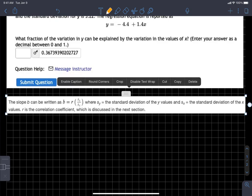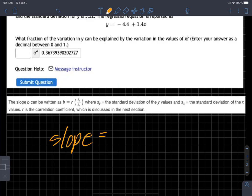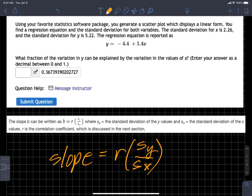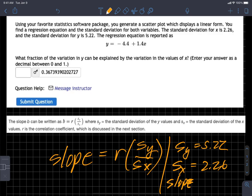The slope B can be written as B, or if we want we can say M, or we can just write slope equals the correlation coefficient times the ratio of the standard deviation of your y values divided by the standard deviation of your x values. And those values are given to us. So knowing that s of y equals 5.22, s of x is 2.26, and that the slope equals 1.4 allows us to do the following.